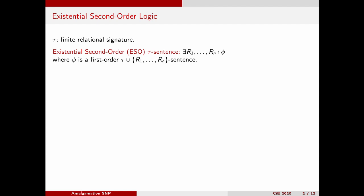Existential second-order logic is a powerful formalism to express computational problems. We work over some fixed finite relational signature tau. An existential second-order sentence over this signature is a sentence that starts by existential quantifications over some new relation symbols R1 up to Rn, followed by some first-order sentence that might use the relation symbols from tau, but also the existentially quantified relation symbols.